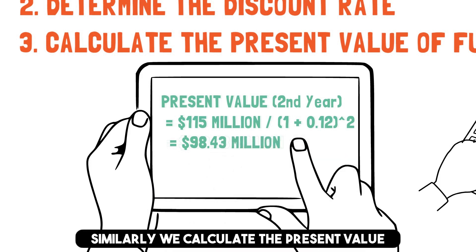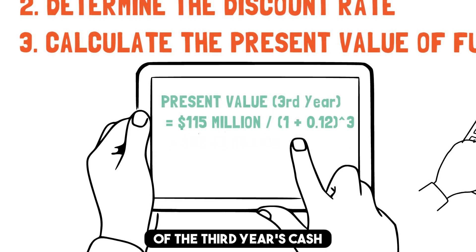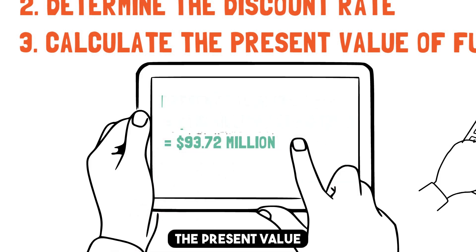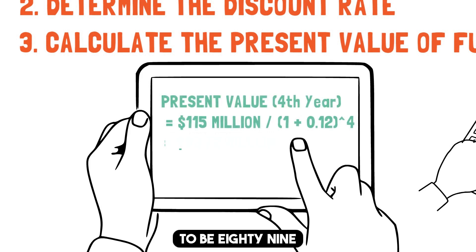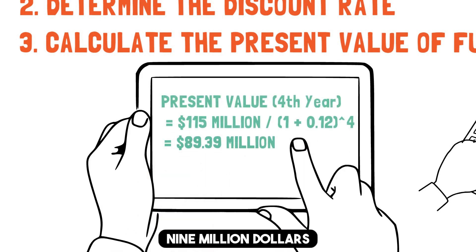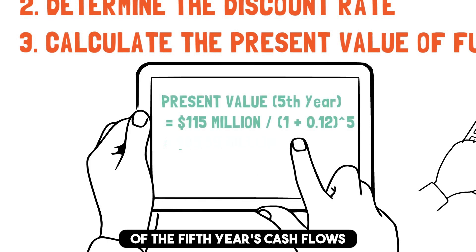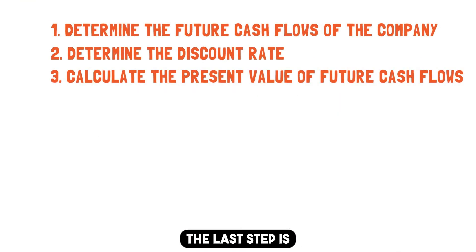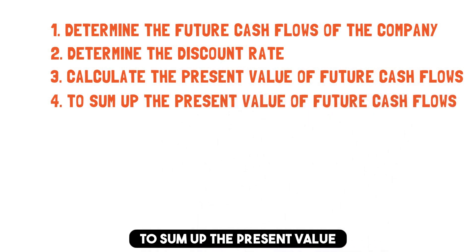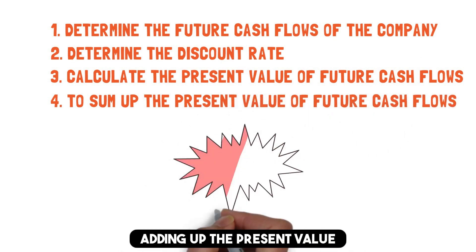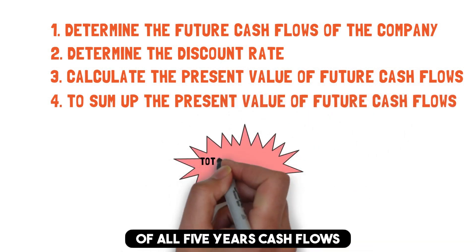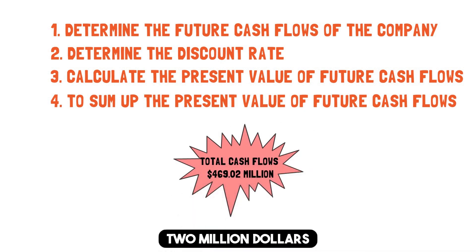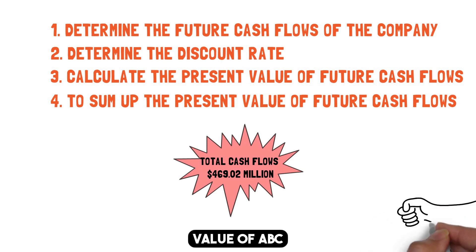Similarly, we calculate the present value of the third year's cash flows to be $93.72 million, the present value of the fourth year's cash flows to be $89.39 million, and the present value of the fifth year's cash flows to be $85.39 million. Adding up the present value of all five years' cash flows, we get a total of $469.02 million, which is the intrinsic value of ABC Inc.